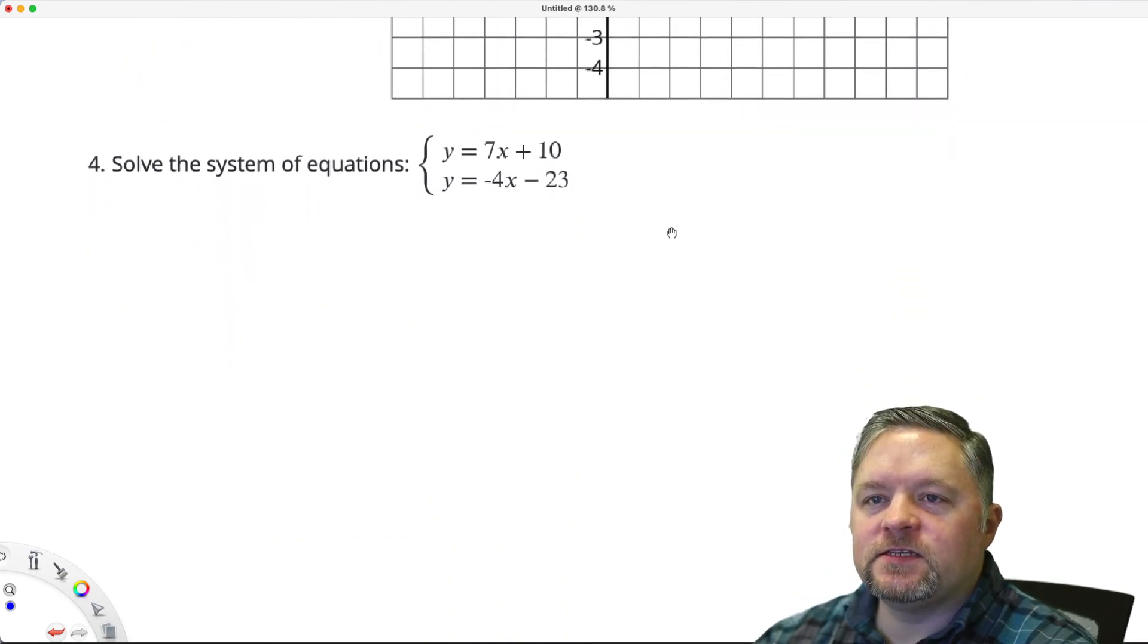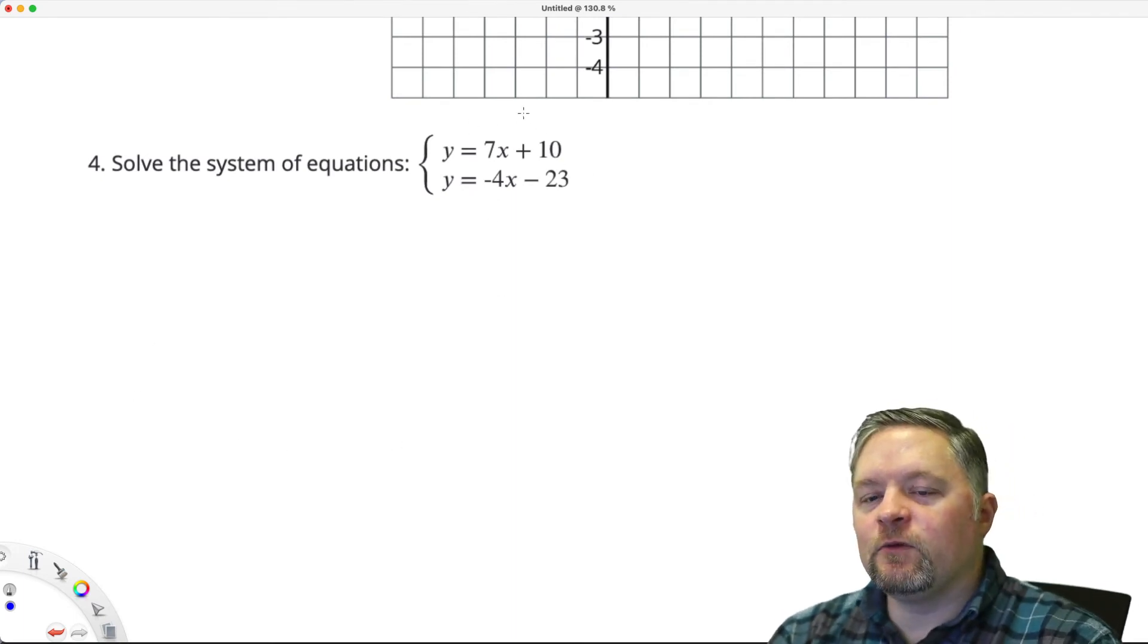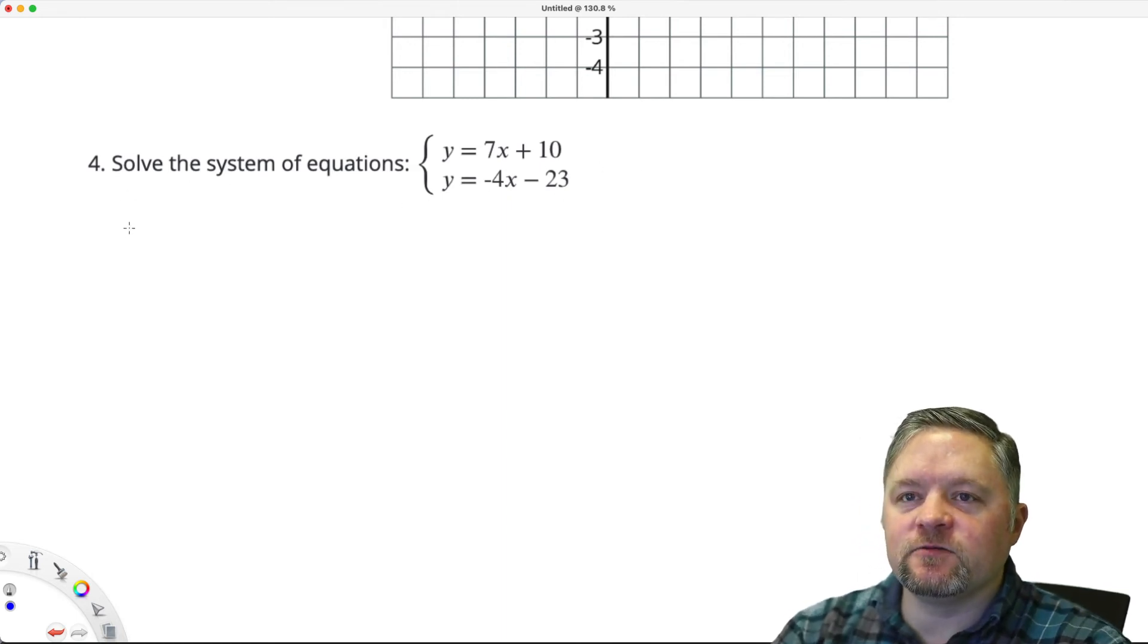Solve this system of equations. Okay. We want to find out where the two equations are equal to each other. We want to find out where they're in the same place. So, we can just set them equal to each other.